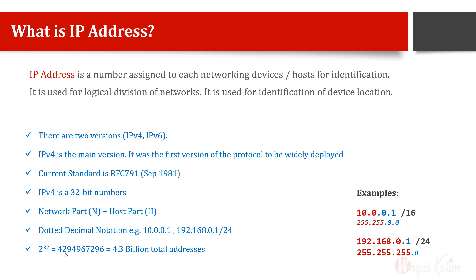The dotted decimal notation is a 32-bit number if we convert it into binary. So 2 raised to the power 32 becomes around 4.3 billion IP addresses in total. The first IP address from this range would be 0.0.0.0, although it is not usable, and the last IP address will be 255.255.255.255. In normal decimal numbers, 0 would be the first and 4,294,967,296 would be the last number.